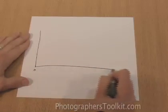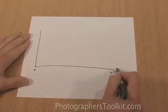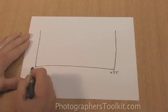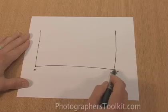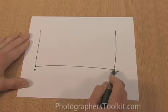You'll remember from part one of the series that a histogram is essentially a graph. It's got zero on one end and 255 on the other end. Zero represents pure black and 255 represents pure white.